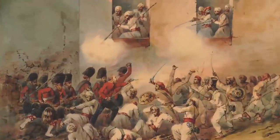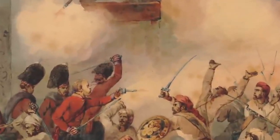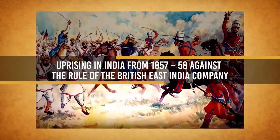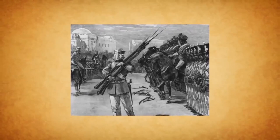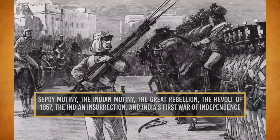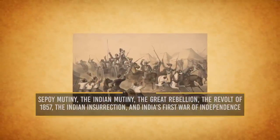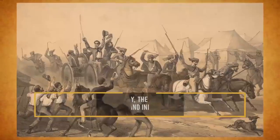The Indian Rebellion of 1857 was a major but ultimately unsuccessful uprising in India between 1857 and 1858 against the rule of the British East India Company, which functioned as a sovereign power on behalf of the British Crown. The event is known by many names including the Sepoy Mutiny, the Indian Mutiny, the Great Rebellion, the Revolt of 1857, the Indian Insurrection, and India's First War of Independence.